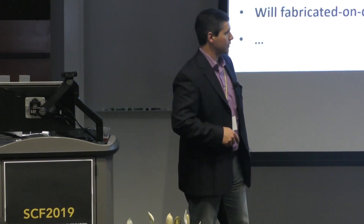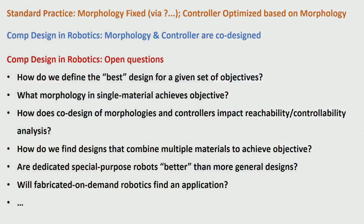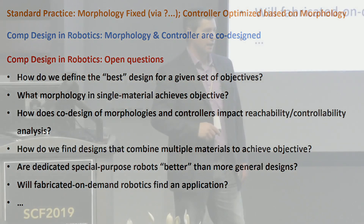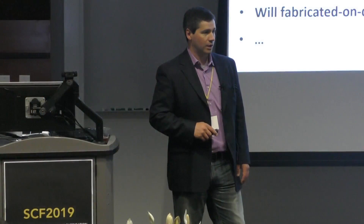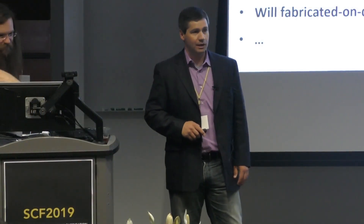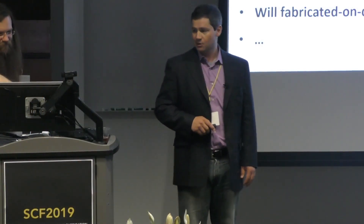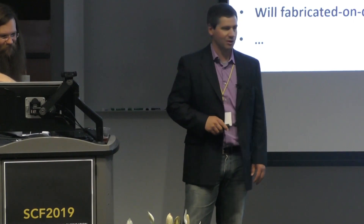One more thing: will these robots actually find an application? Will people care? I thought I would ask you a bunch of questions — the ellipsis is to hopefully inspire more. That's the end of my opening, and it's my pleasure to introduce Rob Shepherd, who is a faculty member at Cornell University in mechanical engineering. Rob is a roboticist and a chemist, and I kind of think about him as making better robots through chemistry.